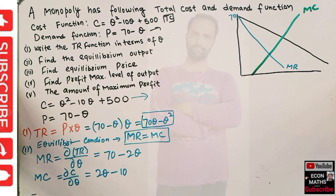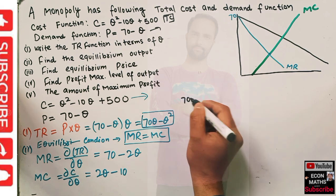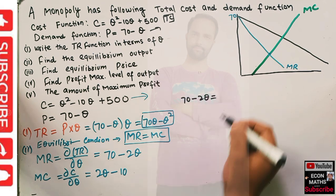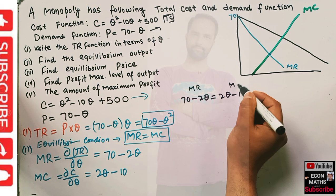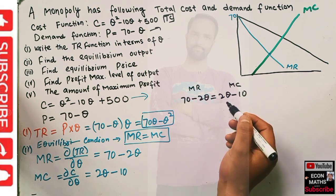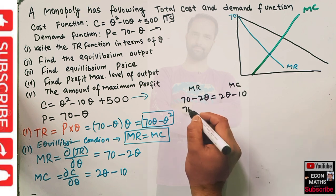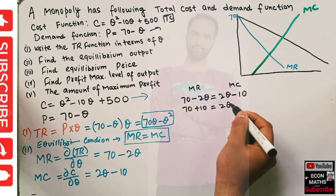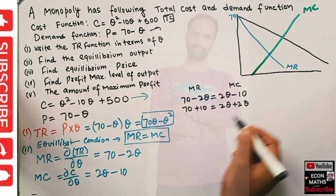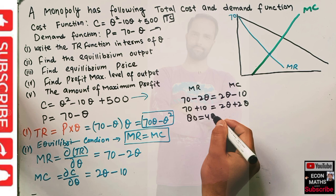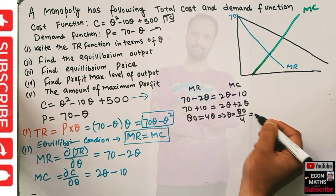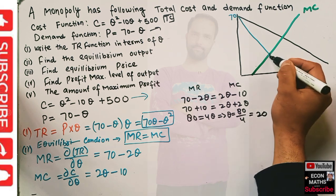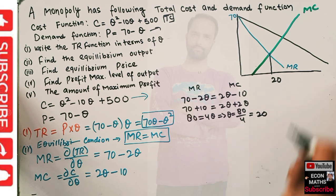To find equilibrium output, we equate marginal revenue and marginal cost: 70 minus 2q equals 2q minus 10. Taking minus 10 to the left-hand side gives 70 plus 10, and taking minus 2q to the right-hand side gives 2q plus 2q. This gives us 80 equals 4q, which implies q equals 80 divided by 4, which comes out to be 20. So our equilibrium level of output is 20.